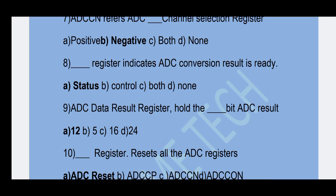Next question: The ADC data register holds the result of the ADC conversion. Option A — Result (total) is the correct answer.